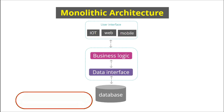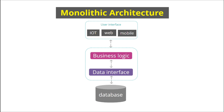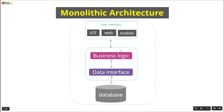Here we'll see the architecture of monolithic. In any application there are many features. If we develop all the business logic of all features in one single code base and deploy it as a whole on one server, this is known as monolithic architecture. So here we are writing all our logic in one single code base, interacting with the database, and deploying as a whole on a server — that is monolithic architecture.